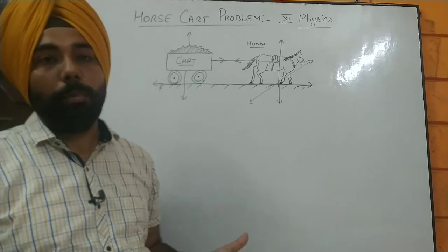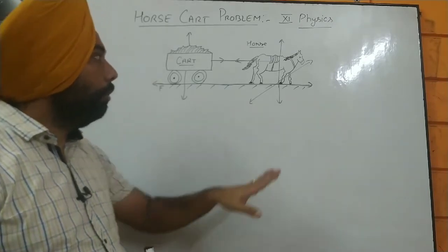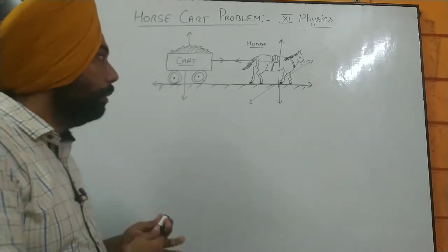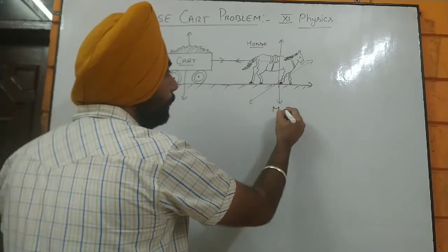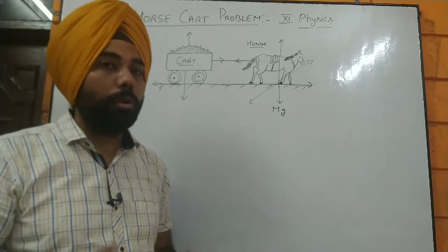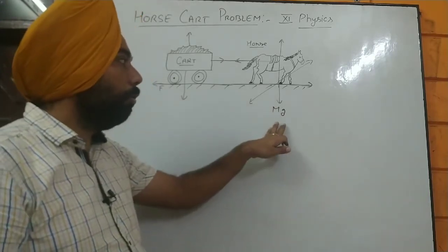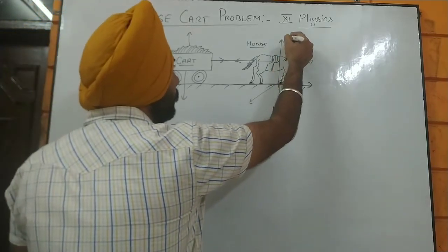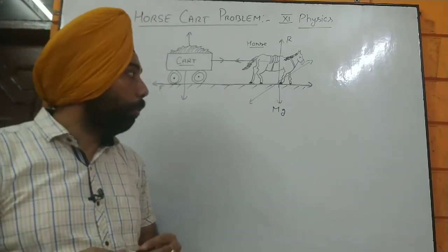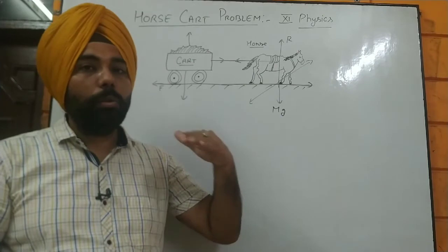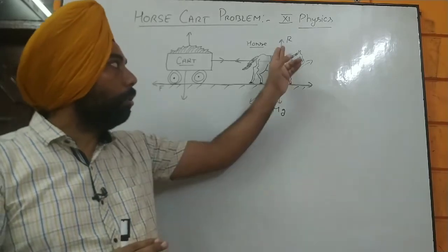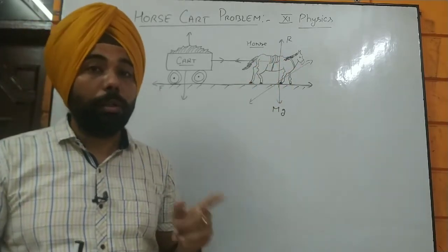That is the simplest diagram of horse and cart. If we have a horse with mass capital M, the weight is always going to be vertically downward as Mg, according to Newton's laws. If the weight is acting downward, we have a normal reaction R. Always remember that the normal reaction is not always opposite to the weight — it is perpendicular to the surface of the body.